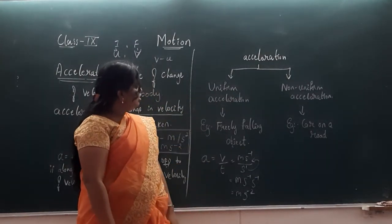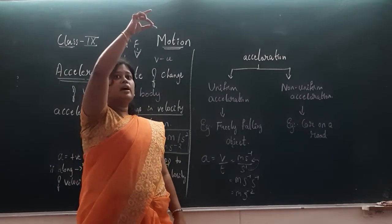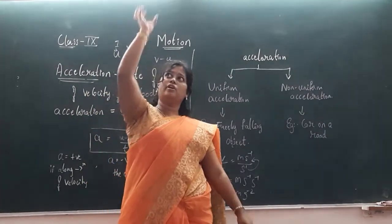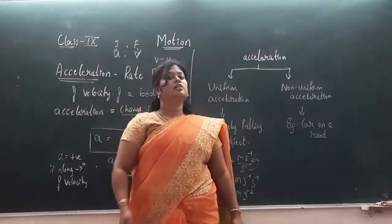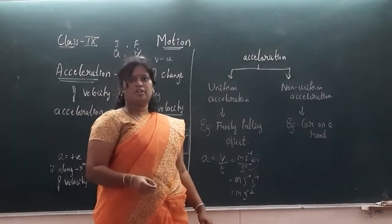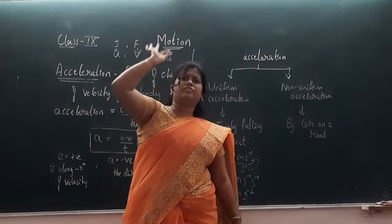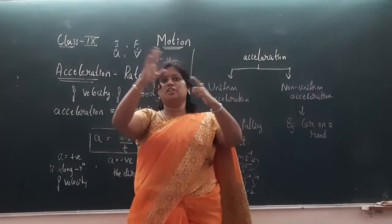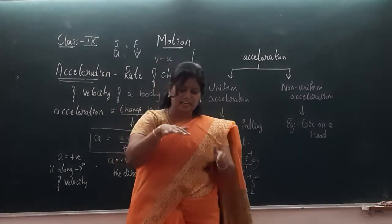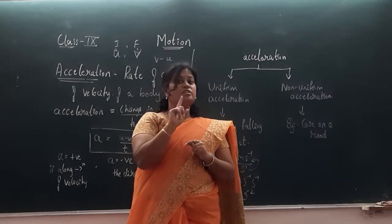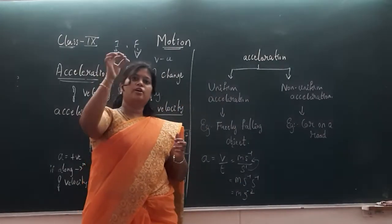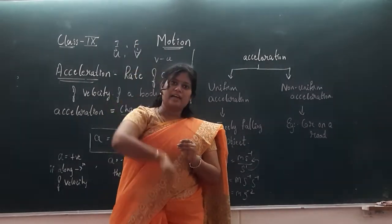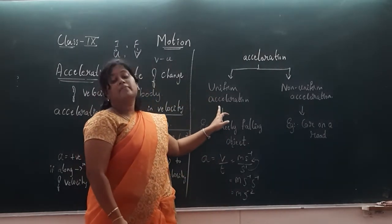What can be an example of uniform acceleration? It is a freely falling body. I have a chalk — I will drop it down. It is a free fall. If I take a ball and drop it from a height, it will freely fall to the ground. Such type of motion has uniform acceleration. But if I drop a feather, it doesn't fall directly. Due to air pressure it goes here and there and finally reaches the ground — there the acceleration is not uniform. But if I drop a solid object like a ball or chalk from the top, it falls directly. That means uniform acceleration is present.